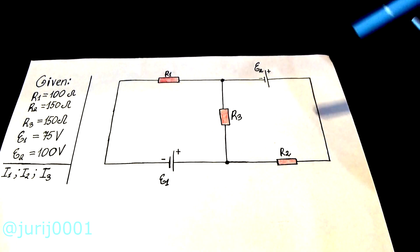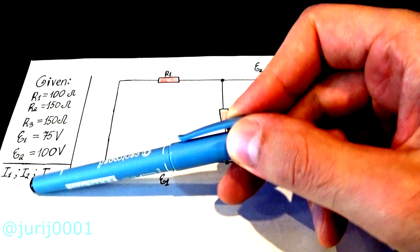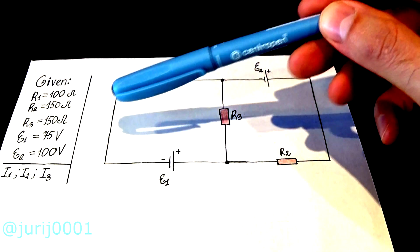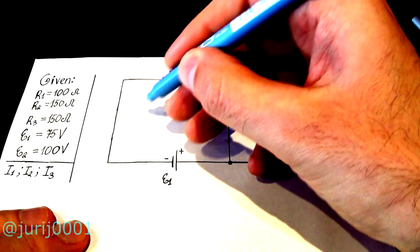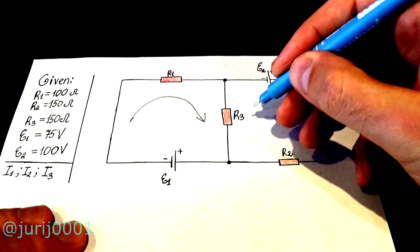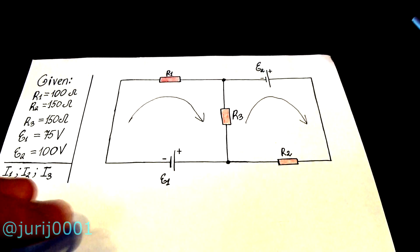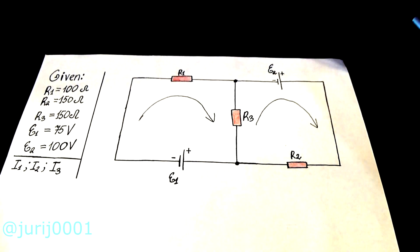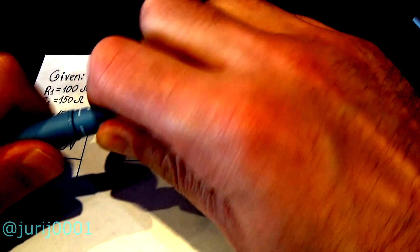Here's a simple task in which we need to find the values of the currents. The first thing we do is choose the direction of the contour bypass — I like to choose clockwise. After that, we choose the direction of the currents; you can choose as you want.